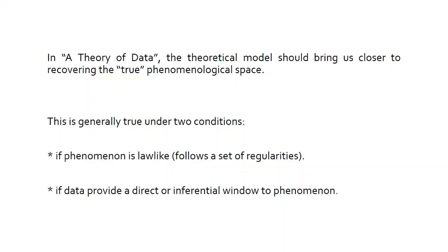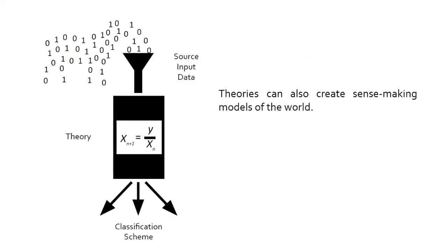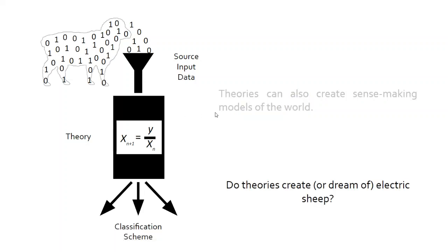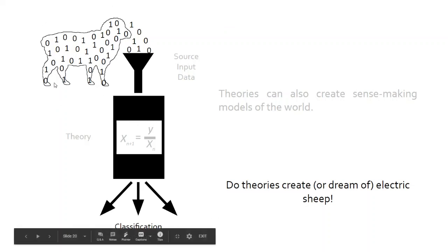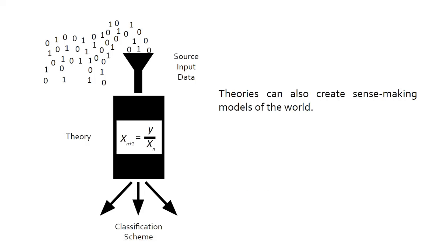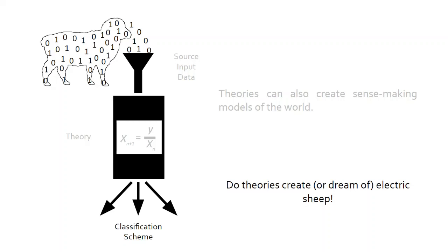Theories can create sense-making models of the world. If you put a bunch of data into this machine you end up with a classification scheme. Do theories create meaningful classifications? Maybe — but they also have to have a definable pattern going in. You can see a structure of a sheep hidden in seemingly random binary values — it gets classified as a sheep, but the structure was always there. The algorithm isn't creating structure; the structure has to be there to begin with.